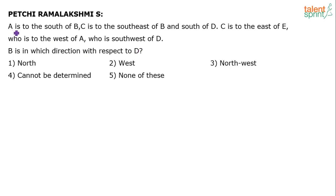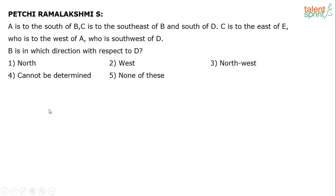Every statement is linked with the previous one: A to B, then C to B, C is linked to D, C is linked to E, E is linked to A, and A is linked to D. So all five persons A, B, C, D, E can be plotted on the map. We need to find B's direction with respect to D.